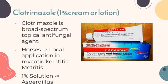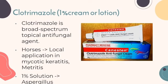Clotrimazole is a 1% cream or lotion and a broad spectrum topical antifungal agent. It is used for local application in mycotic keratitis and metritis in horses, and as a 1% solution for Aspergillus infections of the cornea. In dogs, nasal aspergillosis is treated through intranasal treatment. In humans, it is used for the treatment of Candida vaginitis. For mycotic endometritis in cows, infusions of 400 to 600 mg in saline are given every other day for 12 days. For yeast mastitis, 100 to 200 mg per quarter per day of 1% solution is given as a single daily dose on 4 occasions.